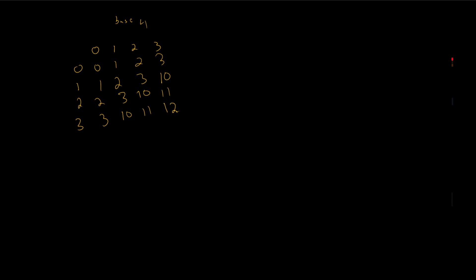Let's do an addition in base four. Start with three plus three — in base ten that's six. Six is one in the fours place and two left over, so we write one-two in base four. And we can see that in the table here: three plus three is one-two.